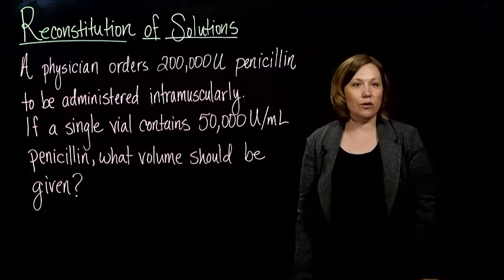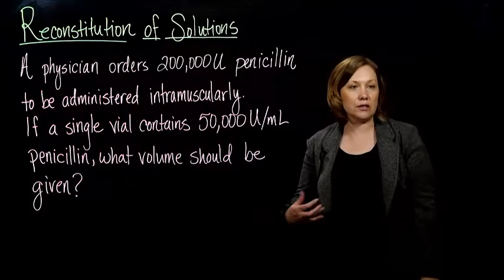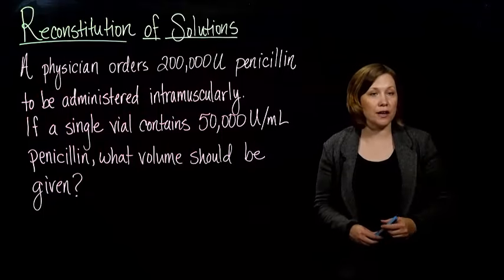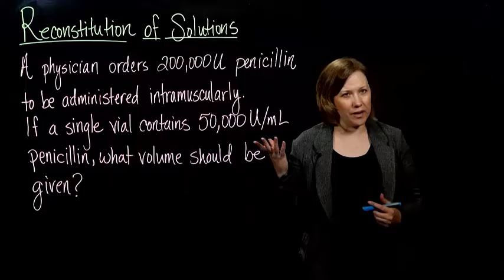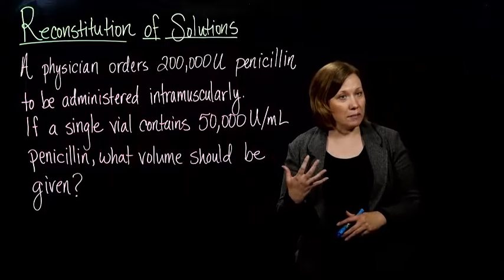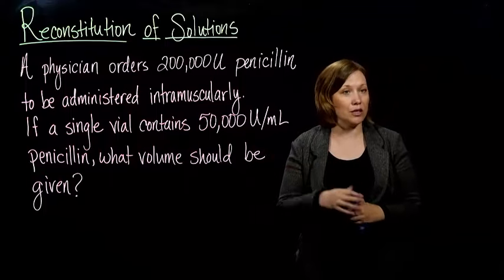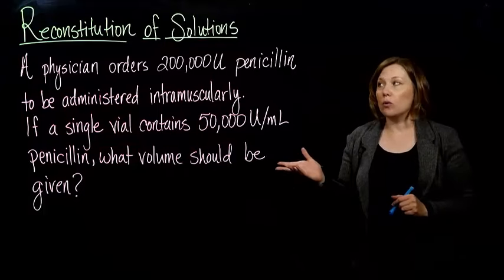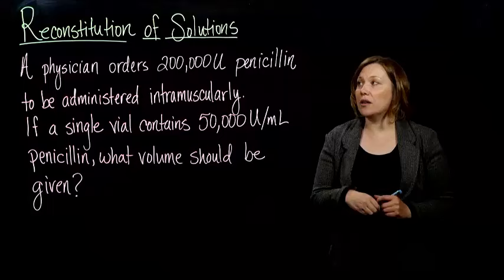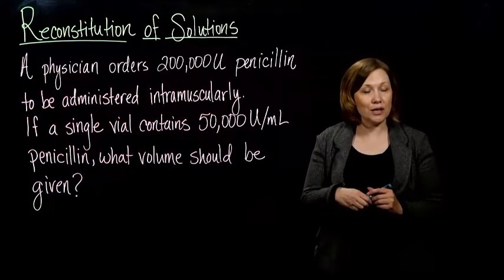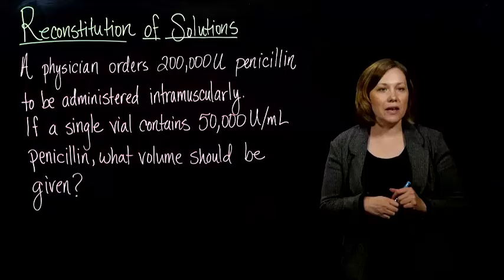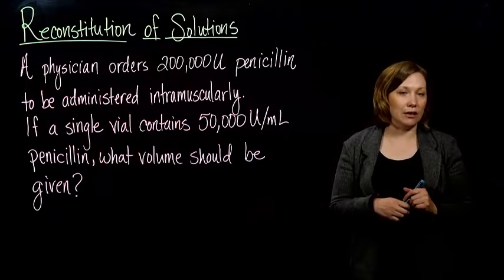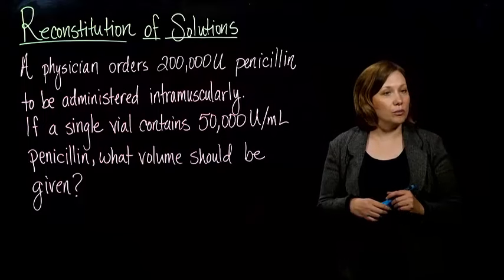Another example of reconstitution of solutions and dosage calculations. A physician has ordered 200,000 U — U is for units, which you can look up in the table of abbreviations in your textbook on page 150. The physician ordered 200,000 units of penicillin to be administered intramuscularly, and a single vial contains 50,000 units per milliliter of penicillin. What volume should be given?